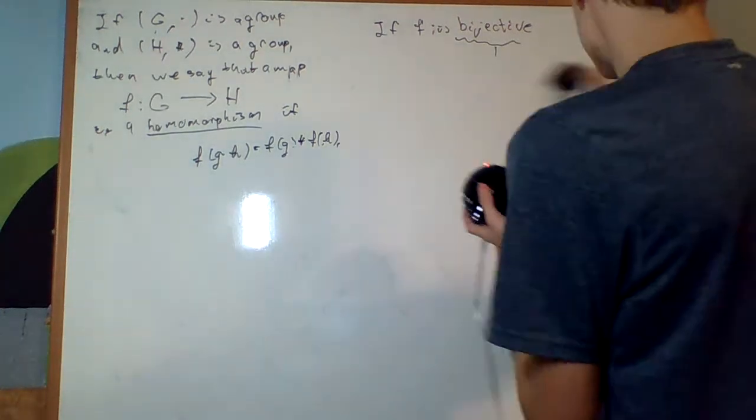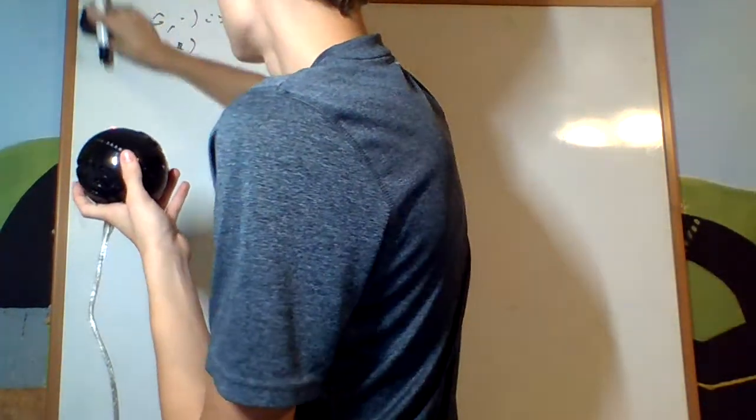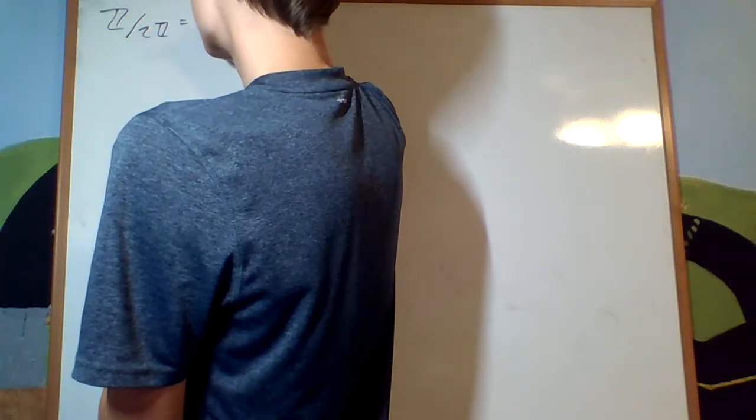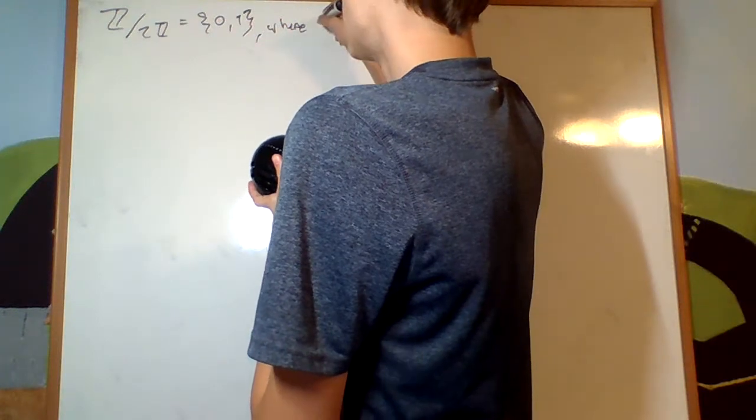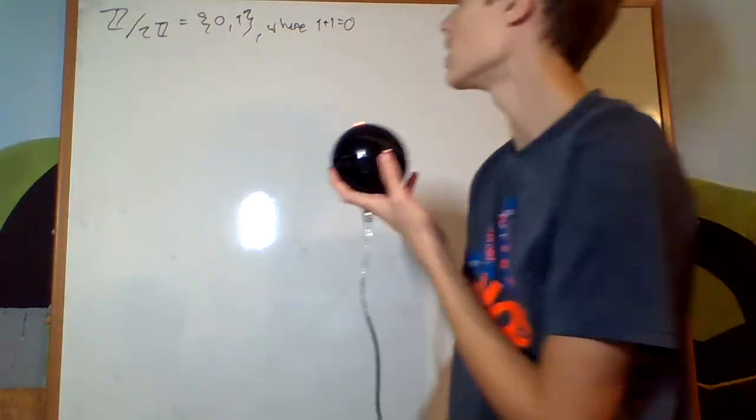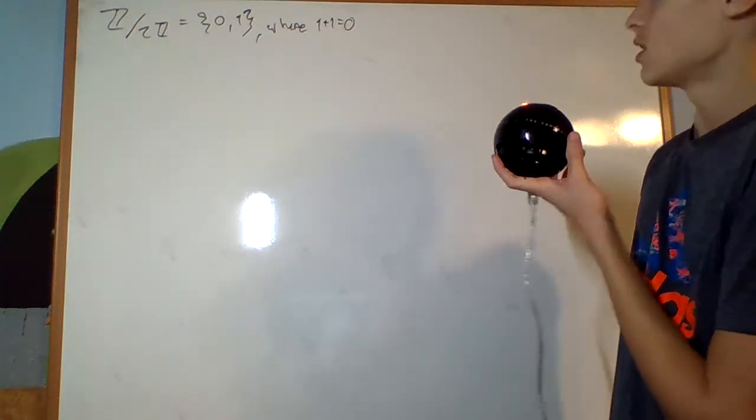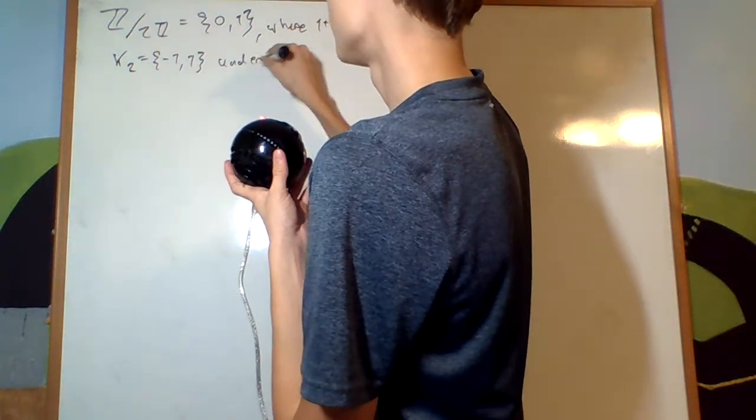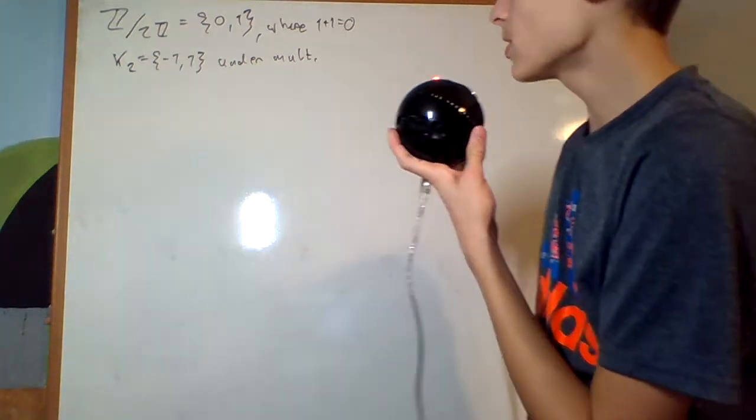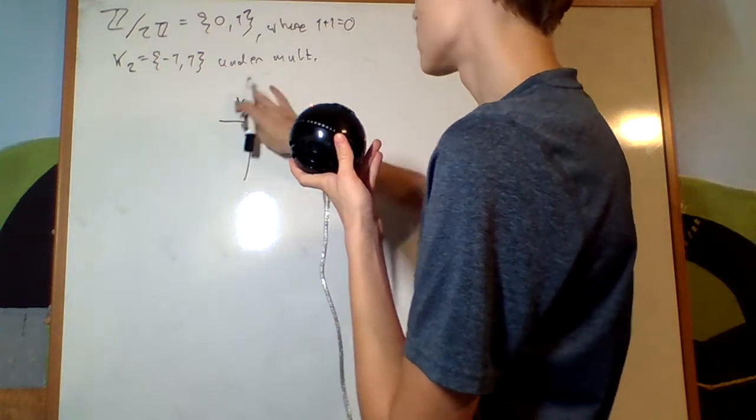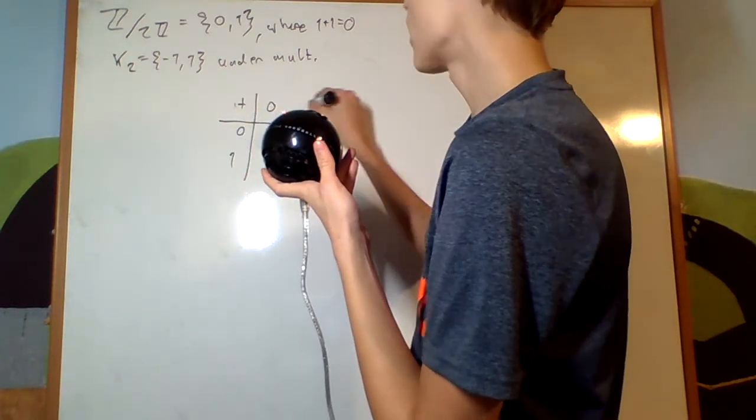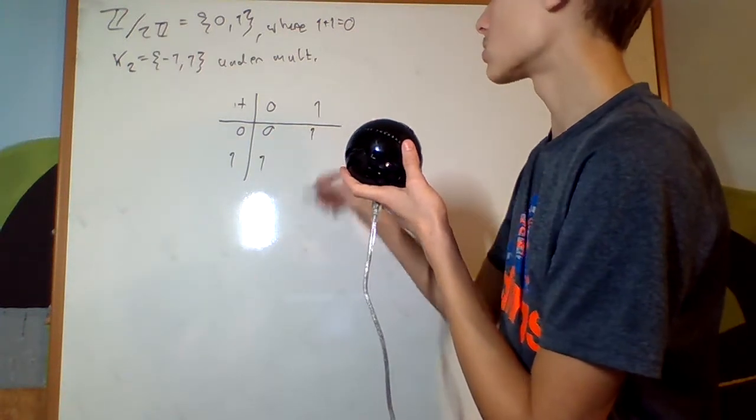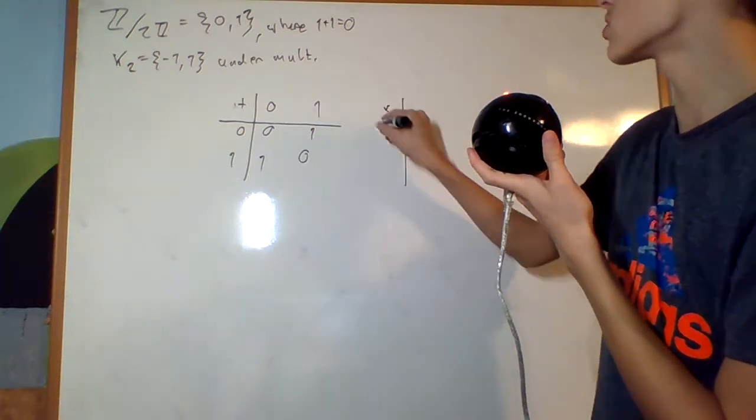So let's do two examples, which are pretty important. We say Z mod 2Z is going to be the set of 0 and 1 where 1 plus 1 equals 0. And then the other additions are just the normal. And K2, the Klein 2 group, is the set of negative 1 and 1 under multiplication. Now I'm going to write out their group multiplication charts. That basically means that I'm going to write out all of their elements on the sides and add them up in each position. What's 0 plus 0? 0. 0 plus 1, 1. 0 plus 1, 1. 1 plus 1, 0.